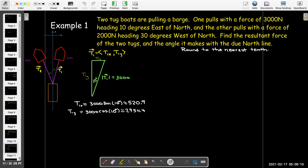For the vertical component, the northward component, I would take the hypotenuse times the cosine, because it's adjacent to the 10 degree angle, and we'll get 2954.4 newtons. So we can write the T vector in its horizontal and vertical components. Let's do the same thing for the second tug and its force with horizontal and vertical components.